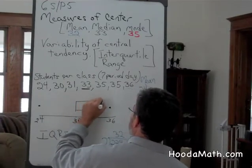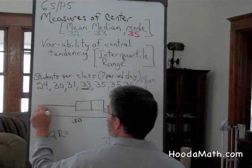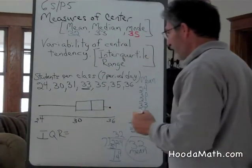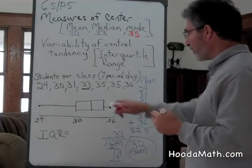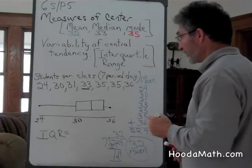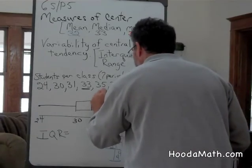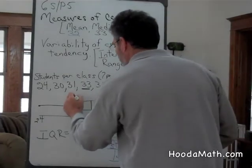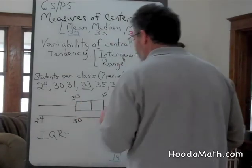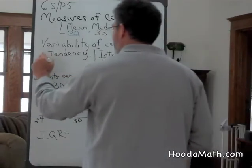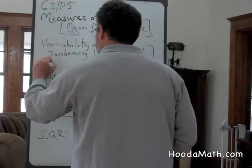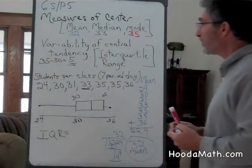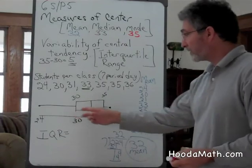This is our box. These are the whiskers. The interquartile range is the distance between the third quartile, which is 35, and the first quartile, which is 30. The distance is 35 take away 30, or 5. The variability is 5 students.